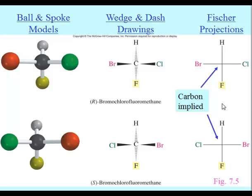Fischer projections are especially useful if we have a molecule with several chiral centers, because you can put them next to each other and determine quickly if they are identical, if they are enantiomers, or neither of those. It's not easy glancing at a Fischer projection to tell the R isomer from the S — ball and stick models and wedges and dashes are much more amenable for doing that kind of thing.